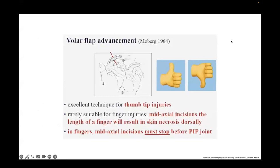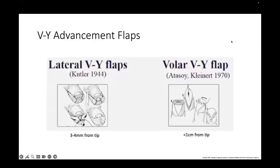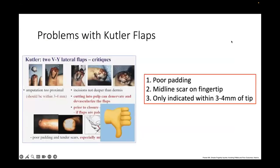The Moberg volar advancement flap is mostly suitable for thumb tip injuries. In the fingers, dissection must stop at the level of the PIP joint, because any more proximal risks skin necrosis over the dorsum. VY advancement flaps come in two varieties: lateral VY flaps (Kutler flaps) are only good for very small segment defects at the tip, and volar VY flaps (Atasoy-Kleinert flap) are better, coming from the volar aspect.